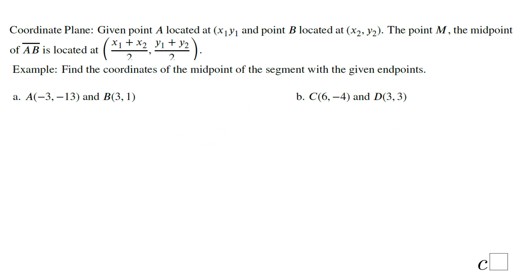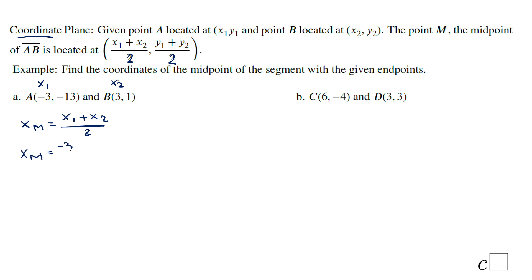A very similar approach can be done for points located on a coordinate grid. The only difference is you have to find both the x-coordinate and the y-coordinate, each being the sum of the respective coordinates divided by 2. For the x-coordinate of the midpoint: x1 plus x2 over 2. With x1 equal to negative 3 and x2 equal to 3, we get negative 3 plus 3 divided by 2, which is 0 divided by 2, so the x-coordinate is 0.